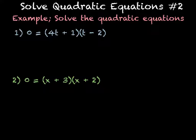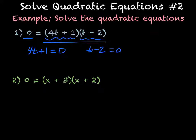So we have 0 equals (4t + 1)(t - 2). What we have to do is if we set 0 equal to either one of them, then the whole thing is 0. So I'm going to do 4t + 1 = 0, and t - 2 = 0.